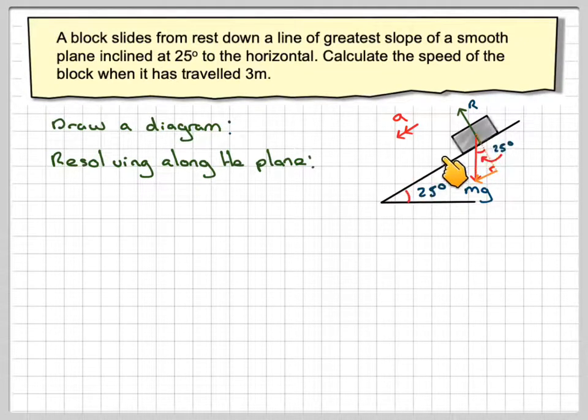So resolving along the plane, I'm going to take this way as positive. So we're going to have the weight. Now the weight here will be mg sine. This is sine opposite the angle. Sine of 25. If this is 25, this angle here will also be 25.